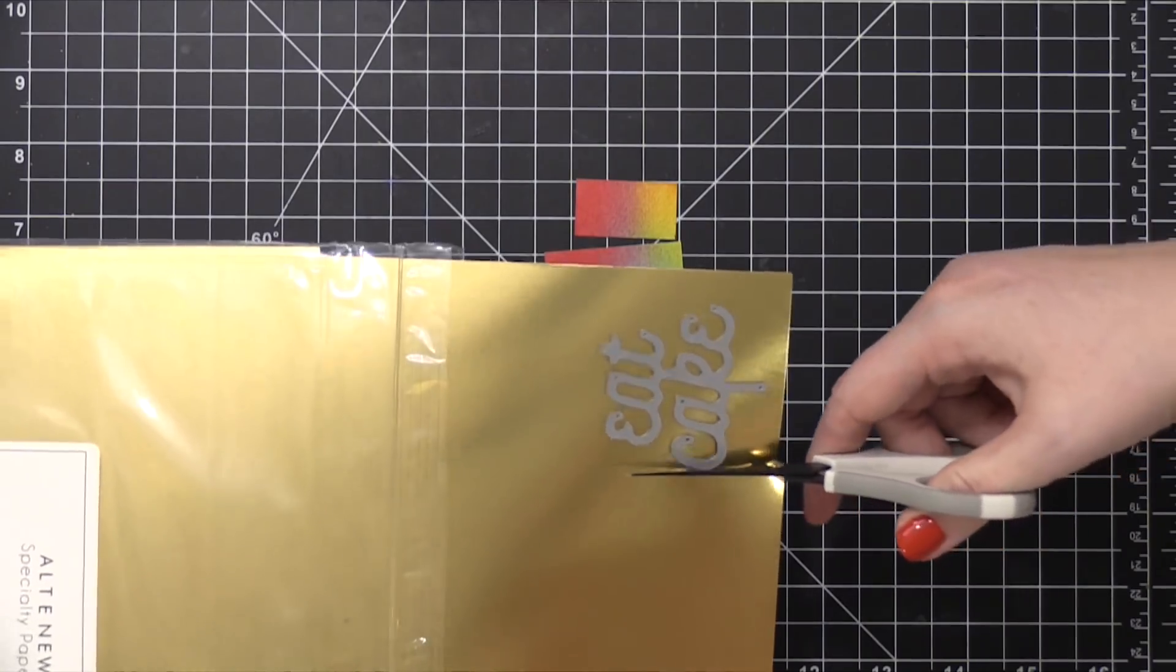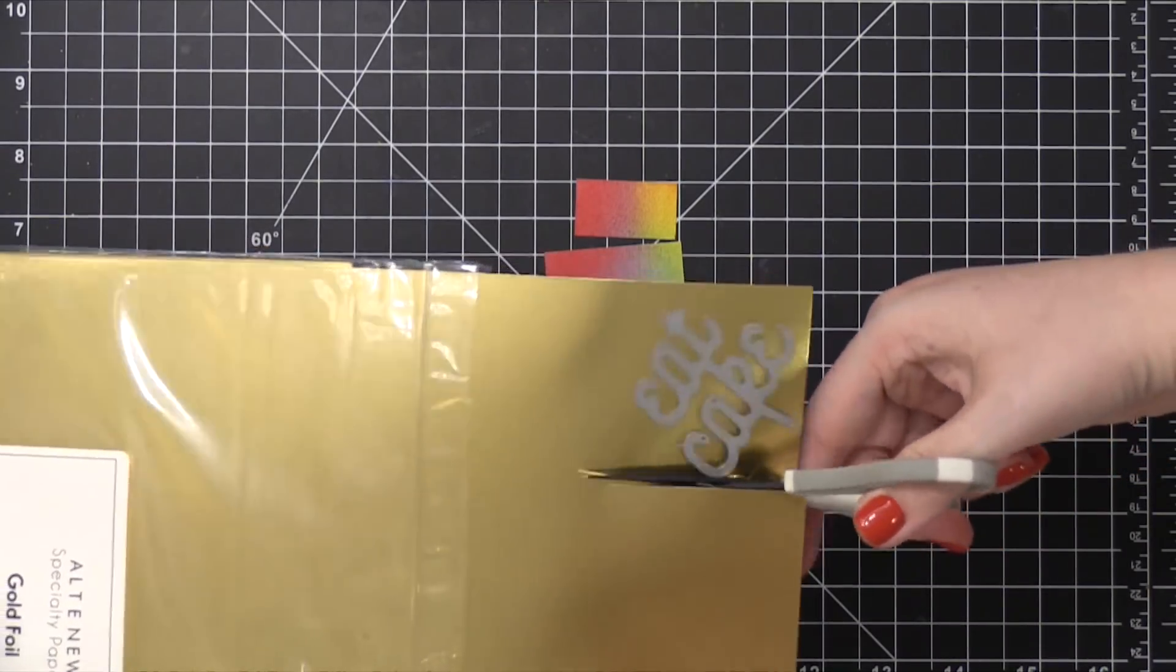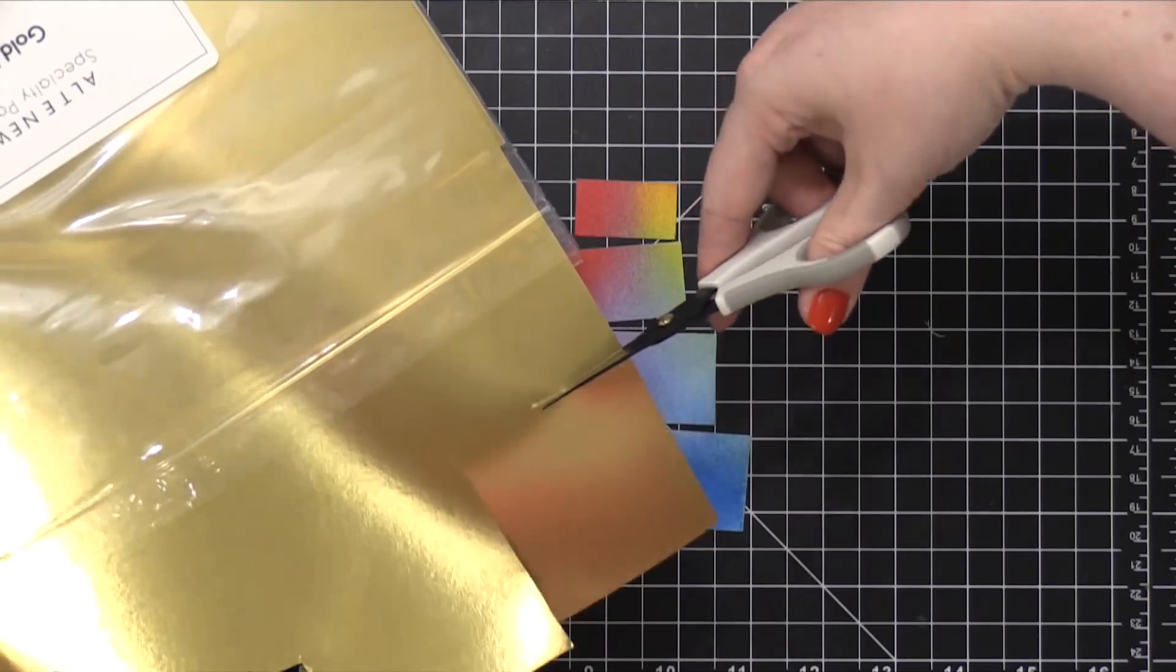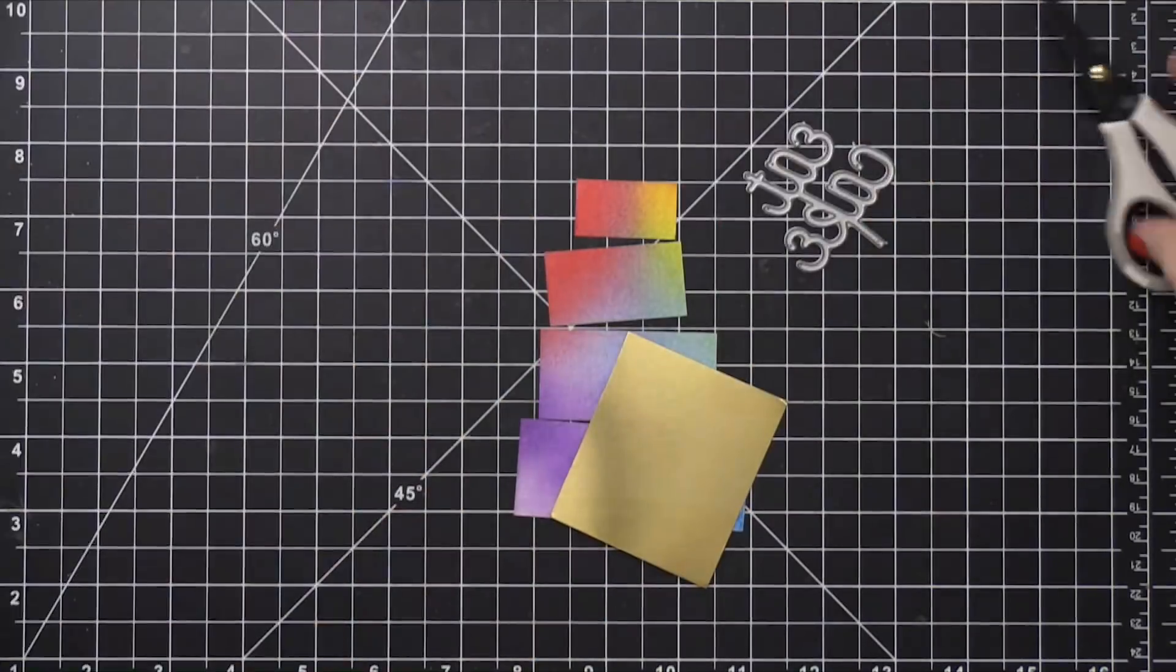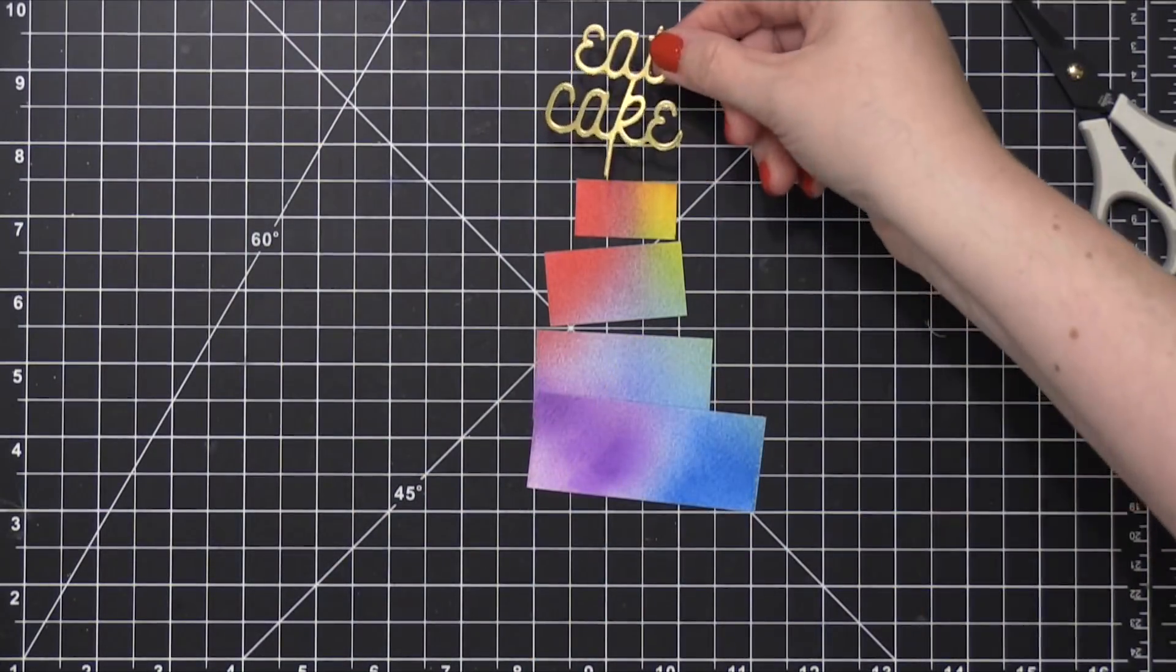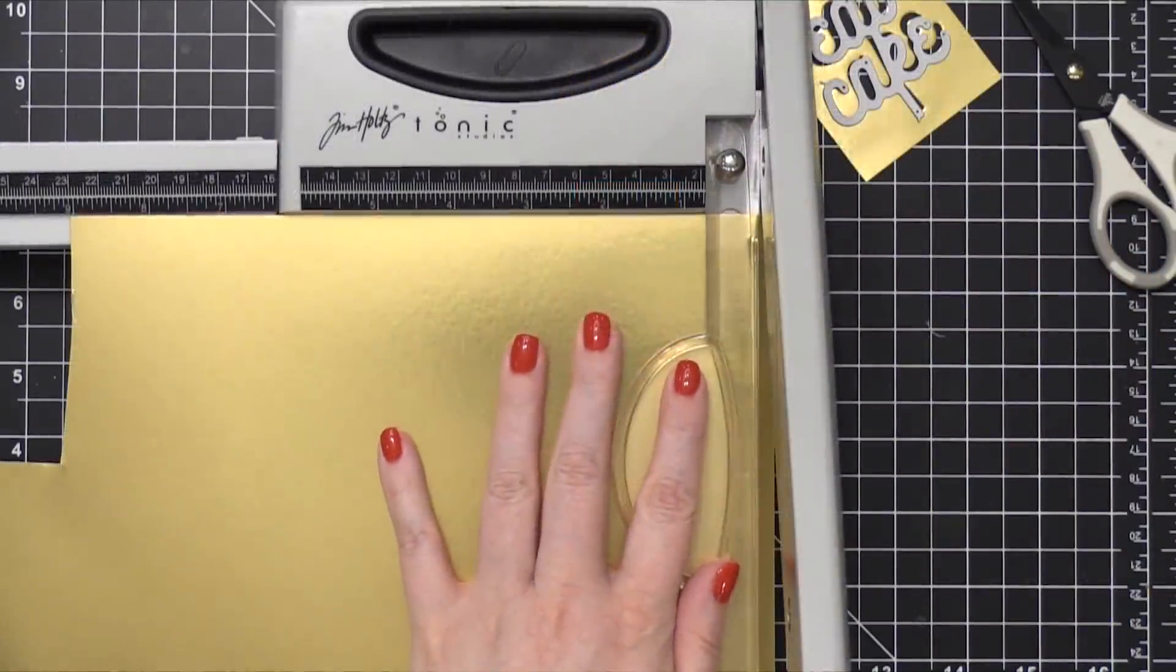So I'm going to use some gold foil cardstock from Altenew to use on this die cut. And this is going to be one of those word decor sticks that they put in the top of cakes. And I thought it'd be really fun to use metallic cardstock for this because they look festive in metallic shade.